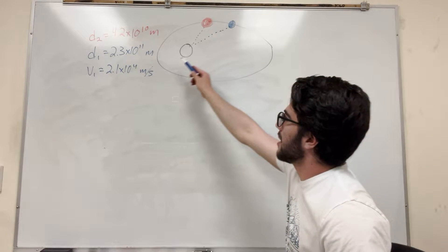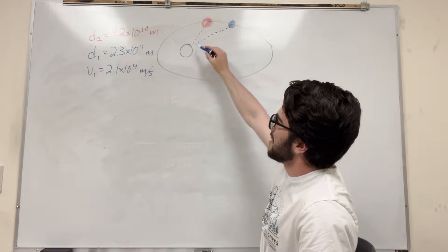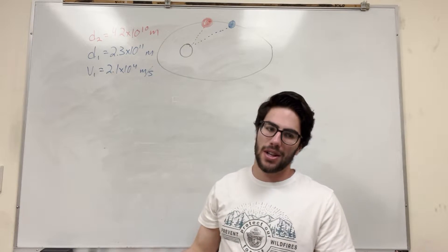As it goes from this point, you know, 2.3 times 10 to the 11 meters, up to 4.2 times 10 to the 10 meters. And it gives us an initial velocity and it wants us to find that after velocity. So let's get started on this problem.